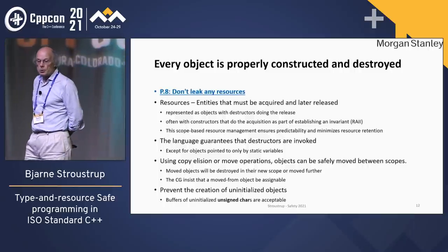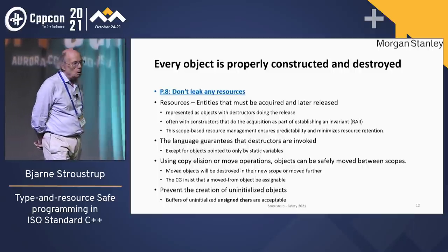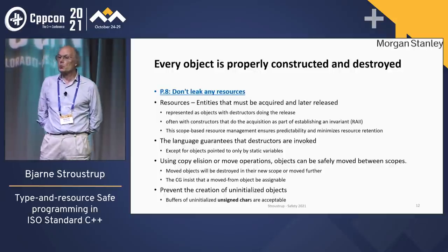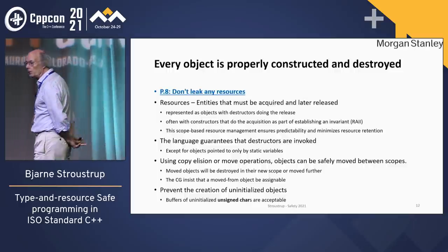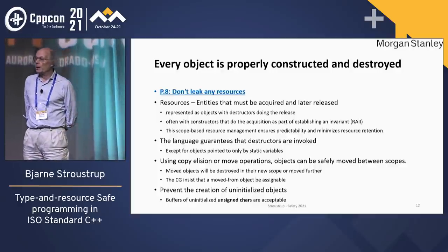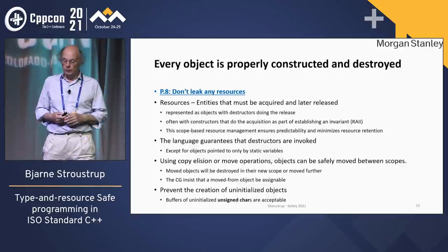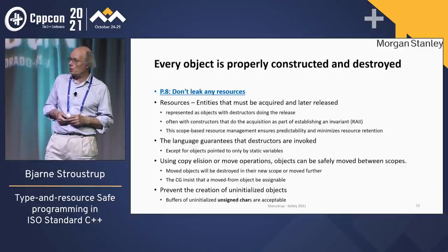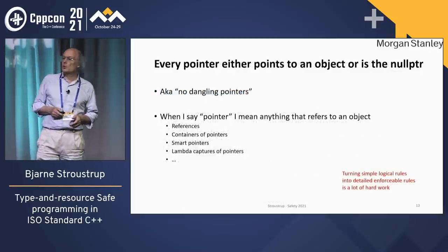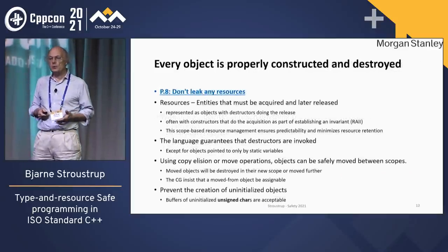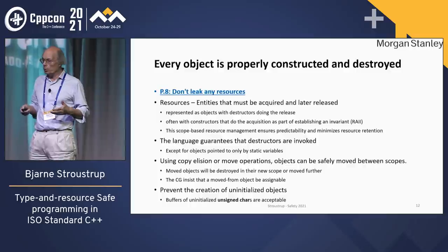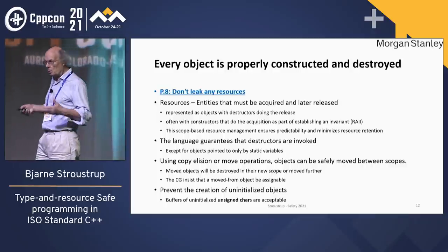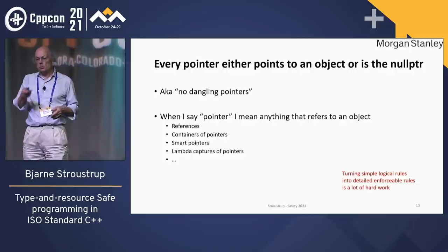Every object is properly constructed and destroyed — that's what's needed for resource management. Every resource — meaning something that has to be handed back to some other part of the system — has to be handled by a resource handle. That's RAII, going back to the earliest days of the language, and this is actually not too hard to achieve. It's not just that you don't leak the resources; you also need not to retain them for too long. One of the easiest ways of slowing down a program is to hold onto objects for twice as long — then you need either twice as big a computer or twice as much time.